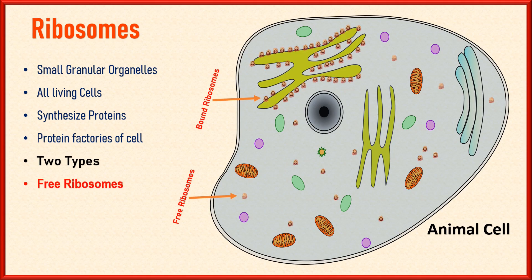Free ribosomes, as the name suggests, are not attached to any membrane-bound organelle and are found floating freely in the cytoplasm of the cell. These ribosomes are responsible for synthesizing proteins that are destined to function within the cytoplasm itself. They are particularly abundant in cells with high protein synthesis demands, such as liver cells and pancreatic cells, which produce enzymes for digestion.